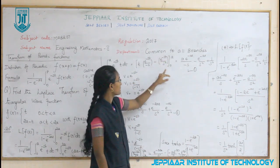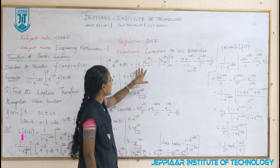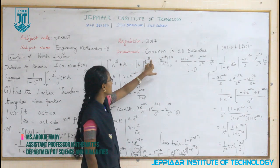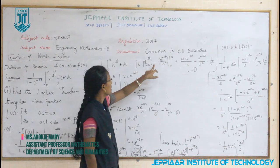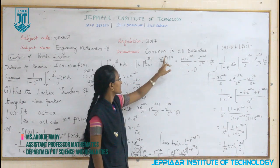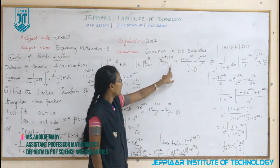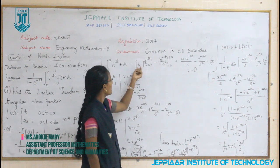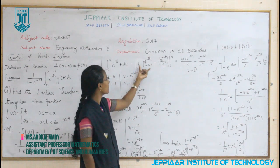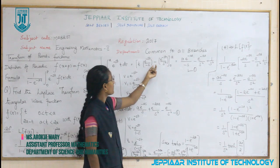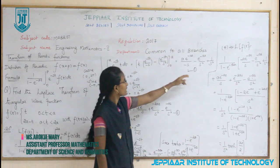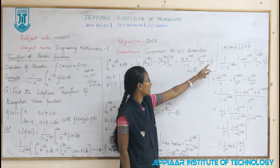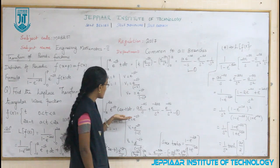Applying the upper limit t = a gives a·e^(−as)/(−s) + e^(−as)/s². Applying the lower limit t = 0: introducing the negative sign, when t = 0 the first term vanishes and we get −(0 + e^0/s²) = −1/s². So the result of the first integral is −a·e^(−as)/s + e^(−as)/s² + 1/s².